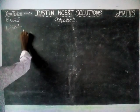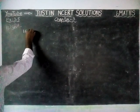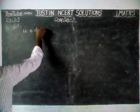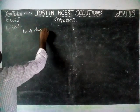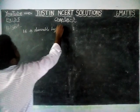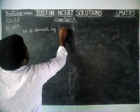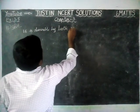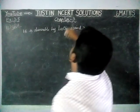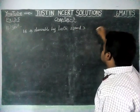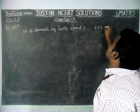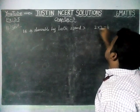First, we will write the question. The given value 18 is divisible by both 2 and 3, so it is also divisible by 2 × 3 = 6.